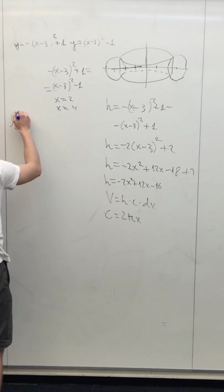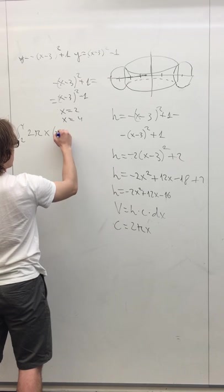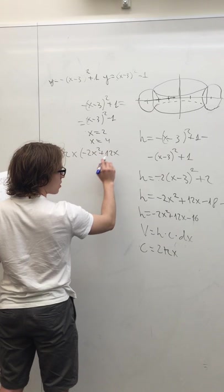And the volume of our solid equals 2 pi x times the height, which is minus 2x squared plus 12x minus 16 times dx.